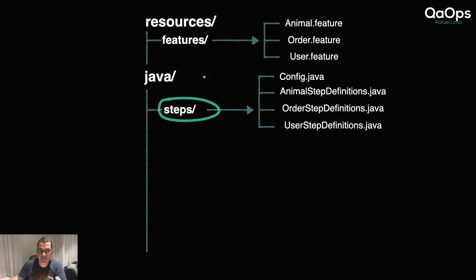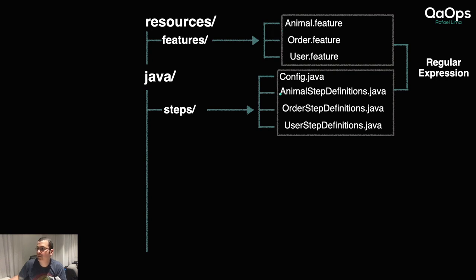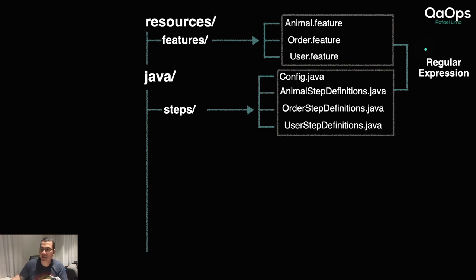Each step in the feature file is going to be mapped to a method in the step definition using a regular expression. So when I have a line like 'When I do this action,' this needs to be mapped to a method — and the way that mapping happens is through regular expressions. By using regular expressions, we can link a human-readable line to a method in the code.